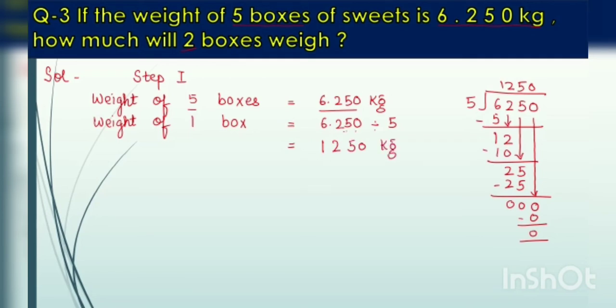The answer that you have got is 1250 but it is incomplete since you have not written the decimal. Counting 3 places from the back side you have to put the decimal. So weight of 1 box is 1.250 kg.